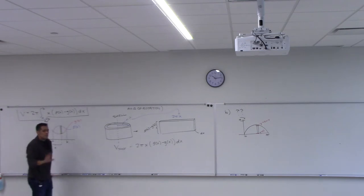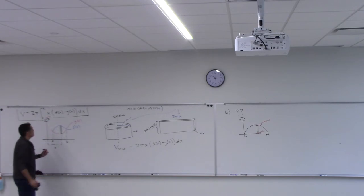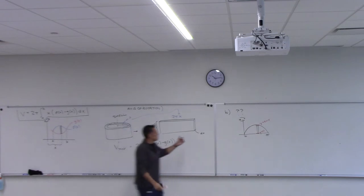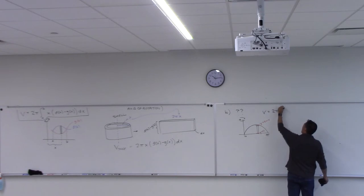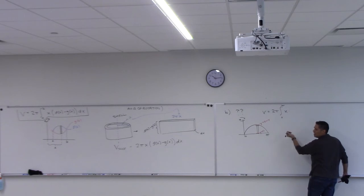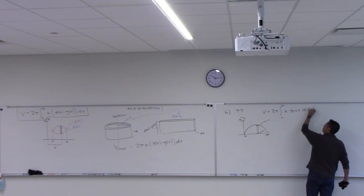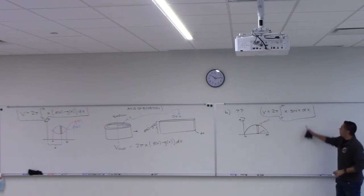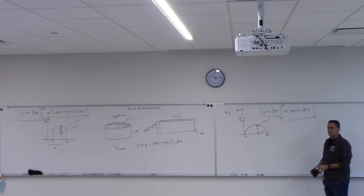So the volume of this slice would be length times width times height: 2πx times f(x) minus g(x) times dx. That is the formula for the volume of one slice. The two dotted lines — this was my cut. This shell came around like this, and the distance from the axis to the rectangle is x.